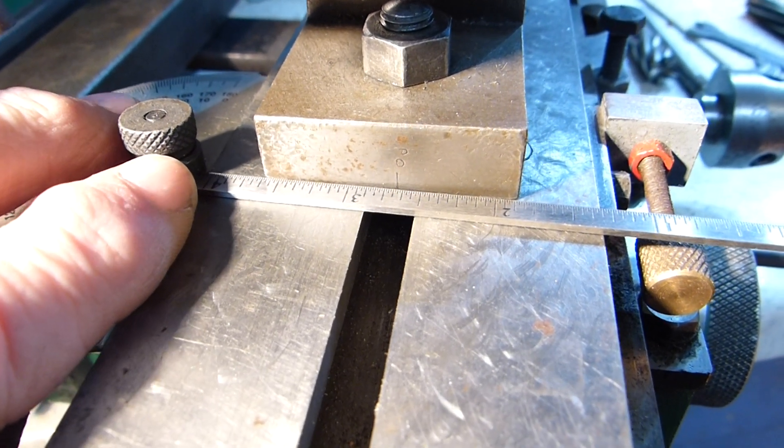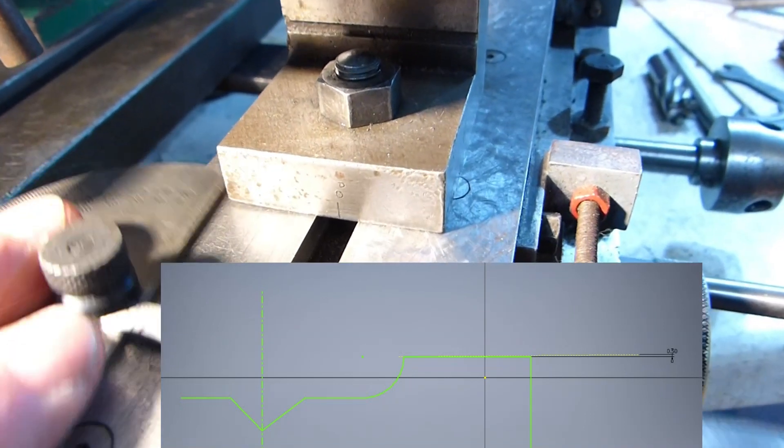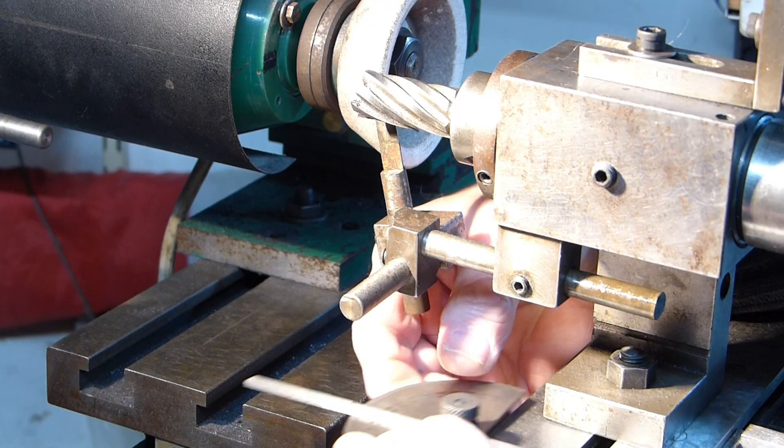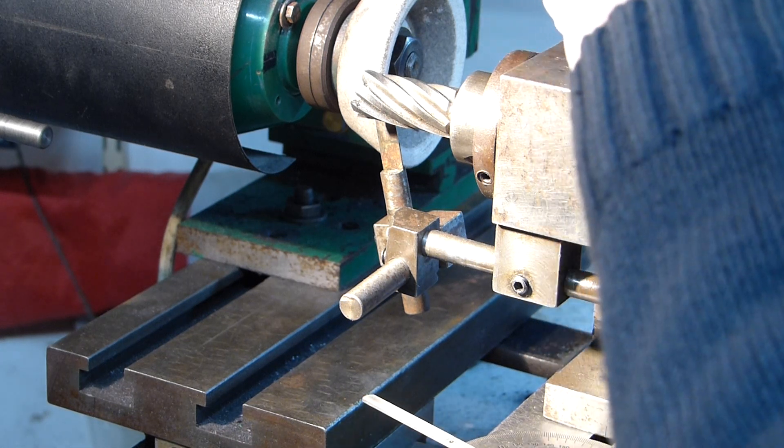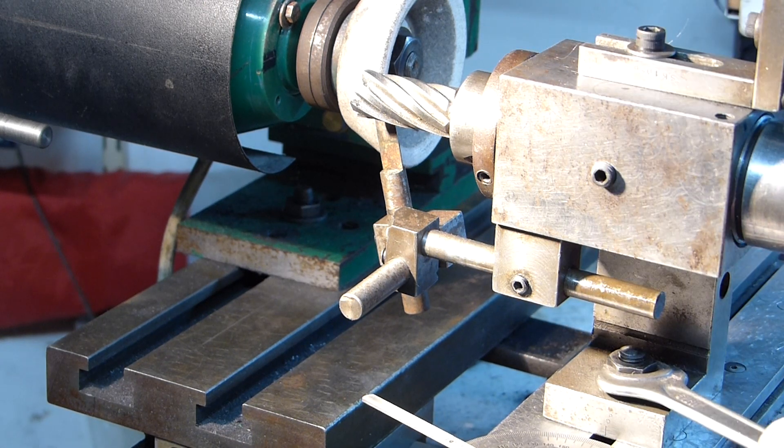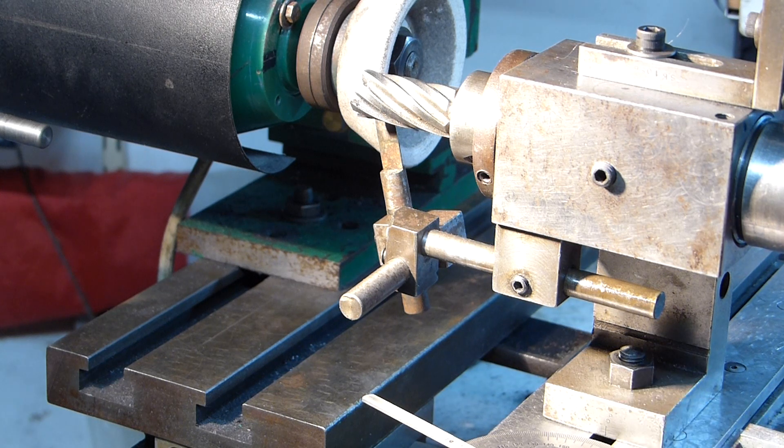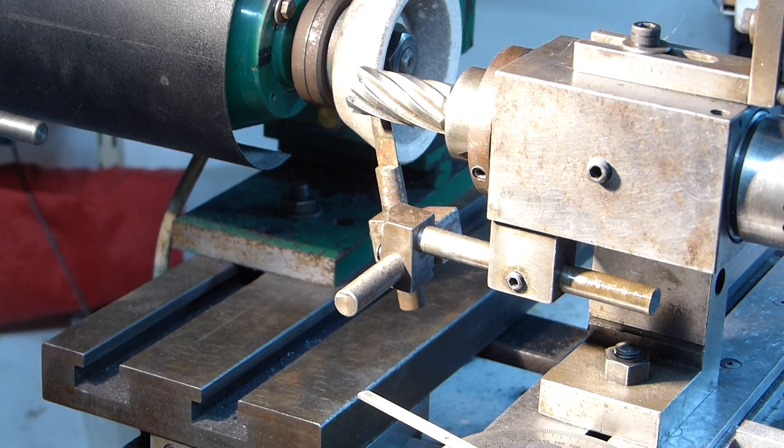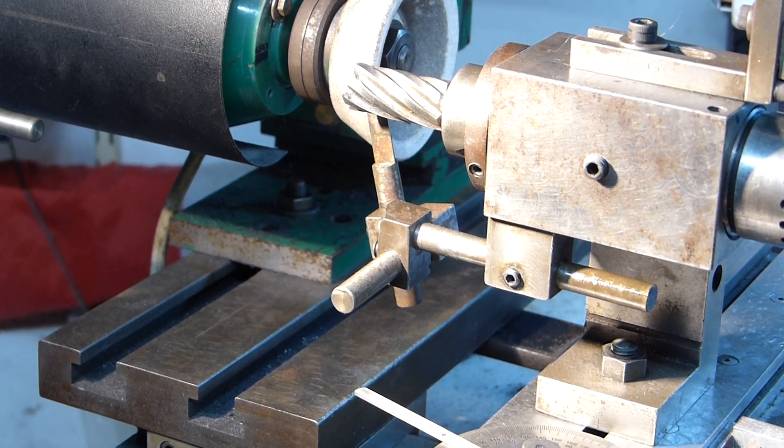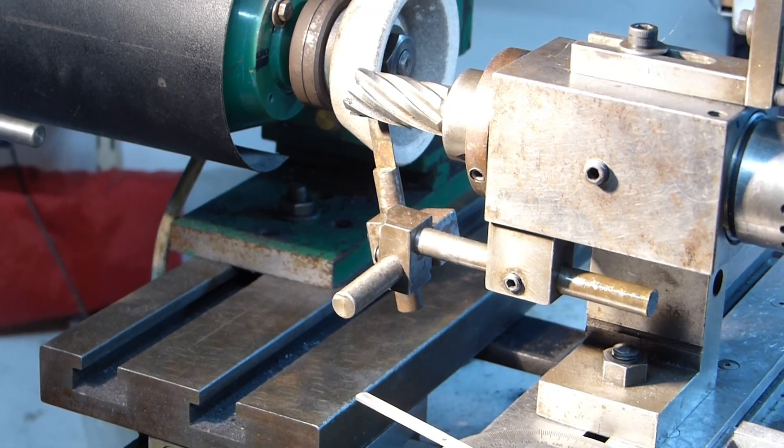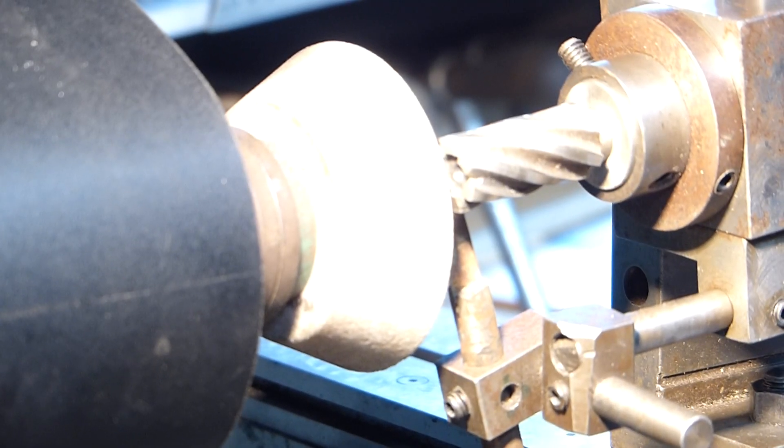Whenever I grind slot drills and end mills I always try and grind them slightly hollow towards the center by about half a degree so that the wheel cuts towards the center of the cutter and leaves it very slightly hollow. This ensures free cutting of the end teeth. Ideally it wants to be dead square but I find that just a slight hollow improves the cutting action and clearance for chips on cutters ground like this.